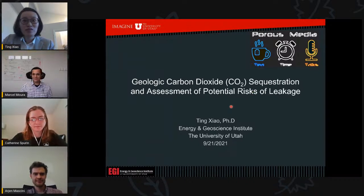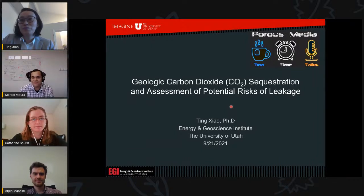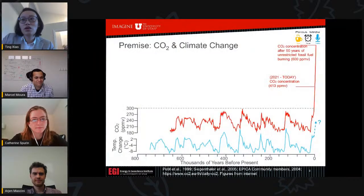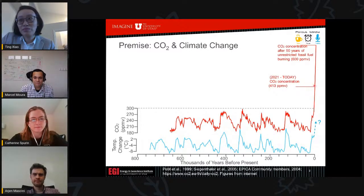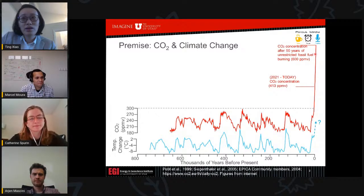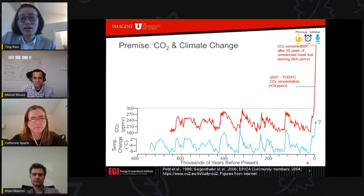As we know, in recent decades atmospheric CO2 levels are higher than ever and growing very fast. Today, CO2 concentration in the atmosphere is about 413 parts per million, much higher than the less than 300 ppm in recorded history. If we don't control CO2 emissions, concentration might reach 600 ppm in another 50 years. Scientists found that global temperature is highly related to CO2 level, and if we don't control emissions, global temperature might further rise and cause severe climate change.